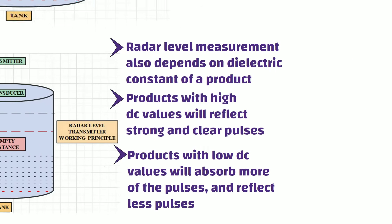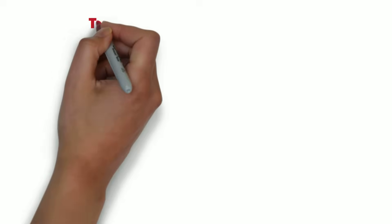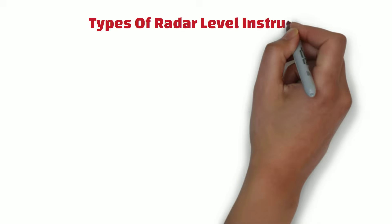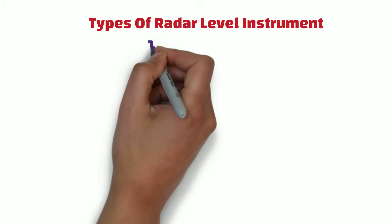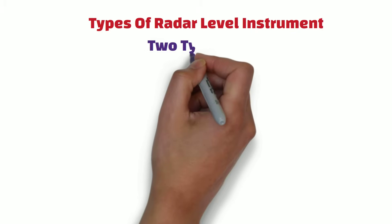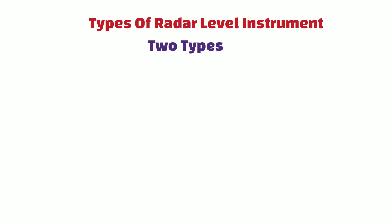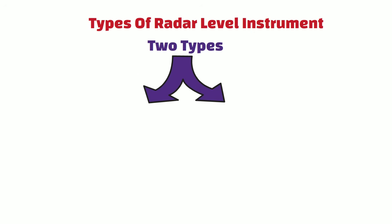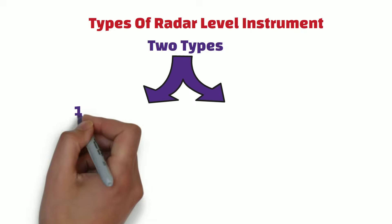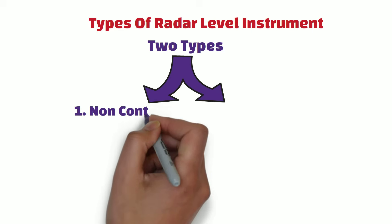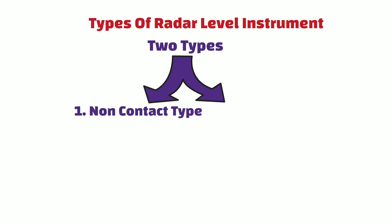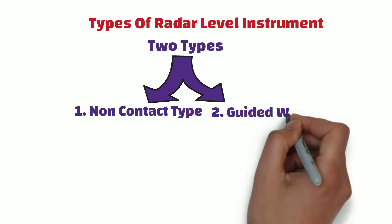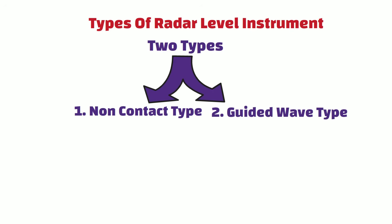Now let's learn about the different types of radar level instruments. There are mainly two types: the first is the non-contact type radar level instrument, and the second type is the guided wave radar instrument.